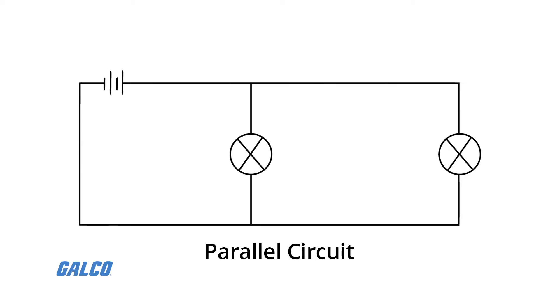The basic idea of a parallel connection, on the other hand, is that components are connected across each other's leads. In a purely parallel circuit, there are never more than two sets of electrically common points, no matter how many components are connected. There are many paths for current to flow, but only one voltage across all components.